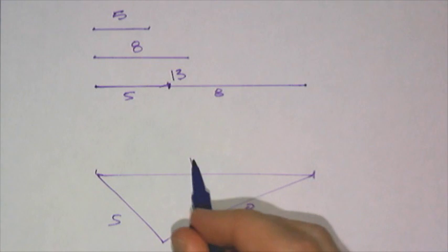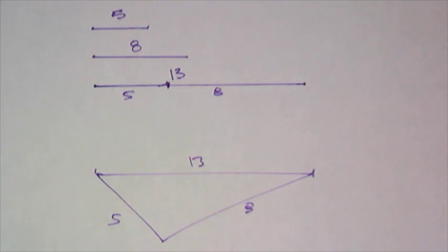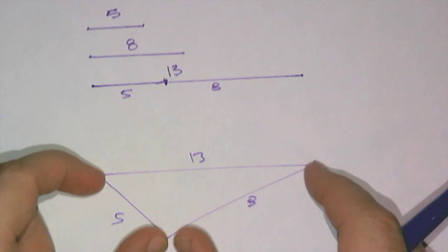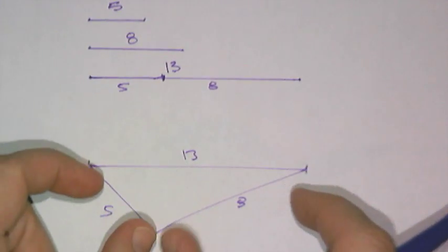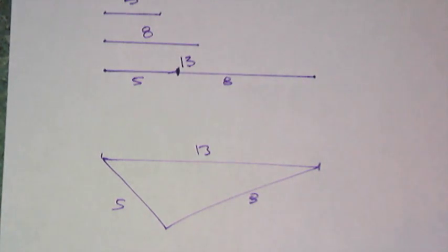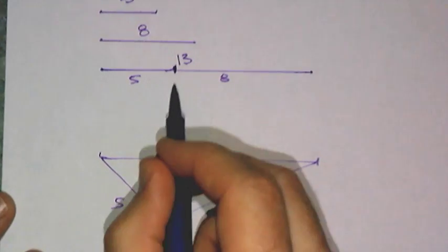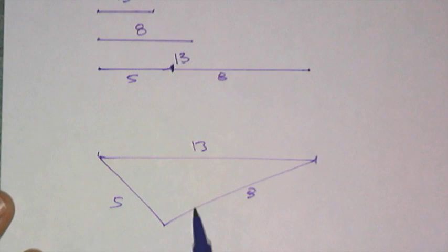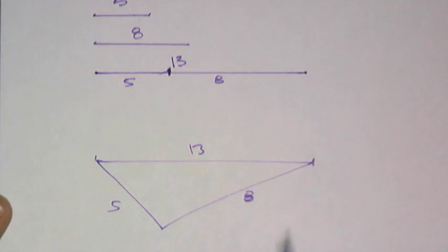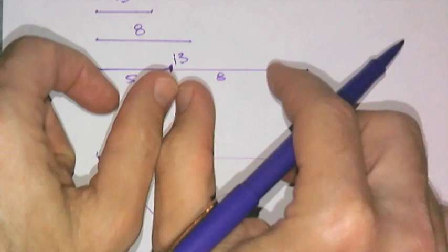I should draw that different. Here's a thirteen, and if I put a five going this way, and it... No, that won't happen. That can't happen. Because if this is eight long, and this is five long, they won't reach. The only place that they'll touch is right there on the line. Because five plus eight is thirteen.